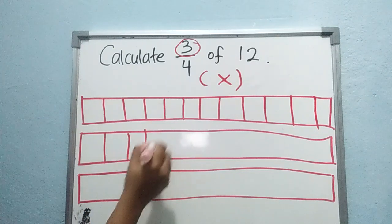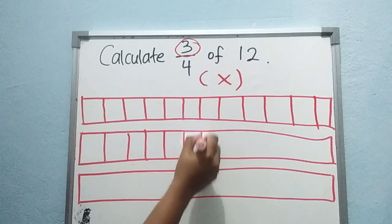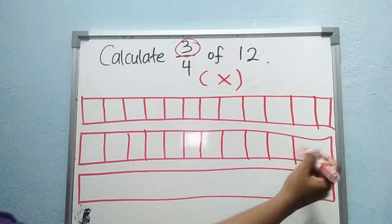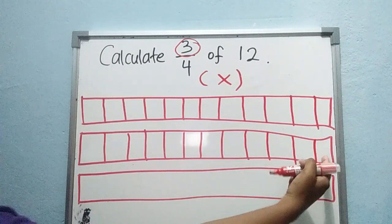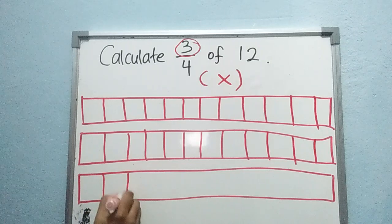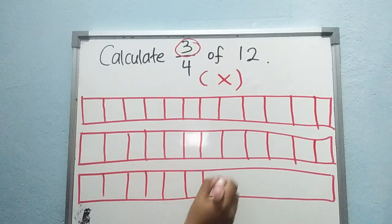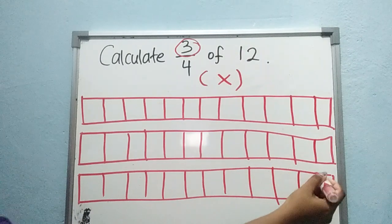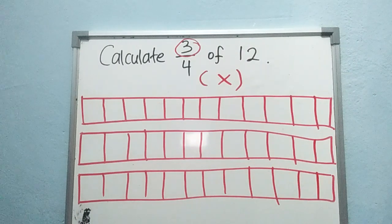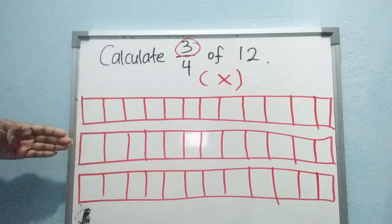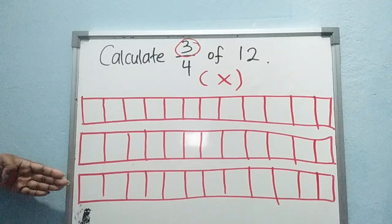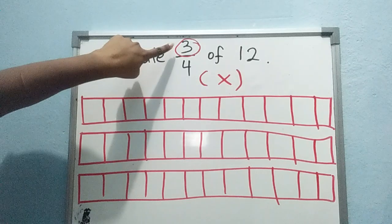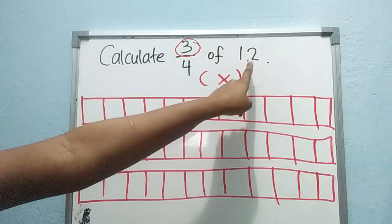In the second long box: 1, 2, 3, 4, 5, 6, 7, 8, 9, 10, 11, 12. And the third long box: 1, 2, 3, 4, 5, 6, 7, 8, 9, 10, 11, 12. So you have 12 boxes here, 12 boxes here, and 12 boxes here. Clear? This step is now done.